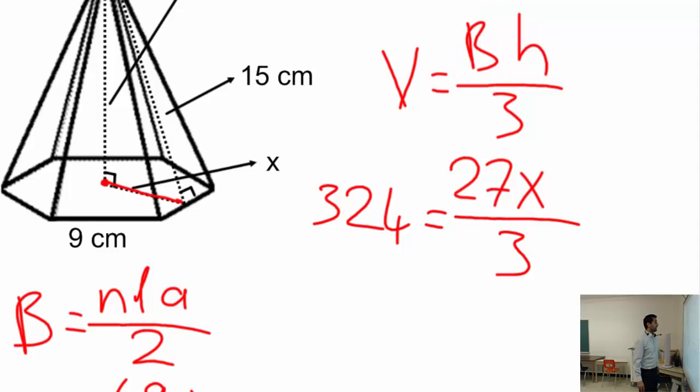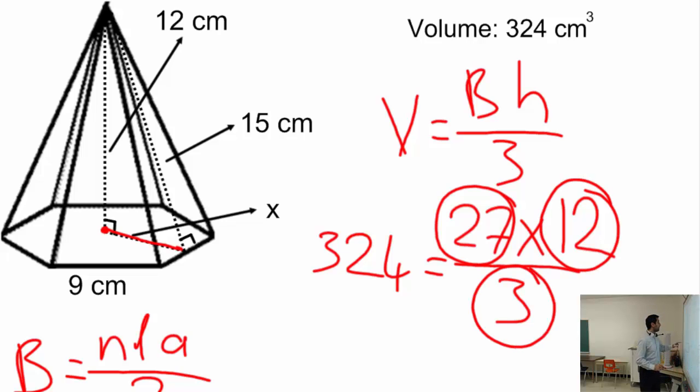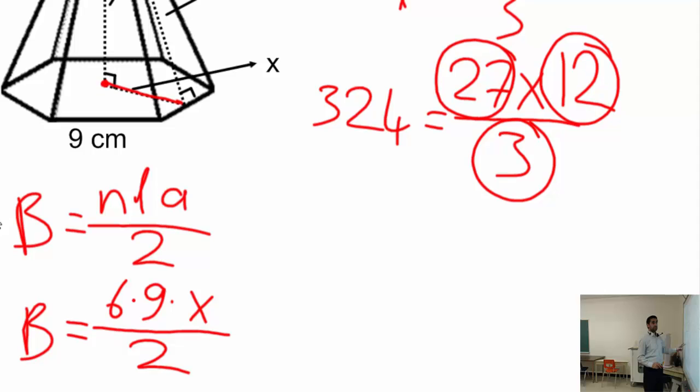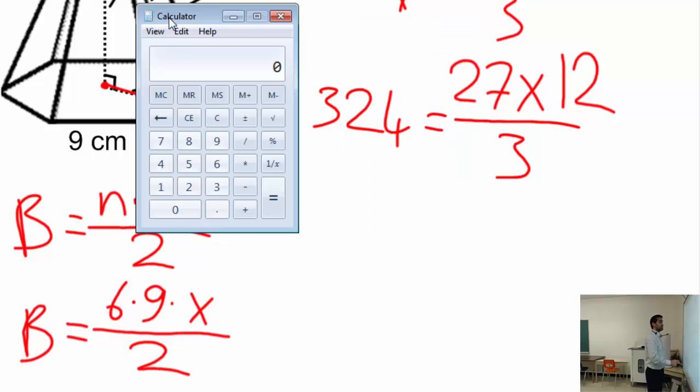How about h? h is the height. Let's look at the question - h is this, which is directed to there, which is 12. So let's replace that here as well. Now let's put those numbers together and we're going to leave x alone. 27 times 12 divided by 3, what will that give us? 27 times 12 divided by 3 equals 108.